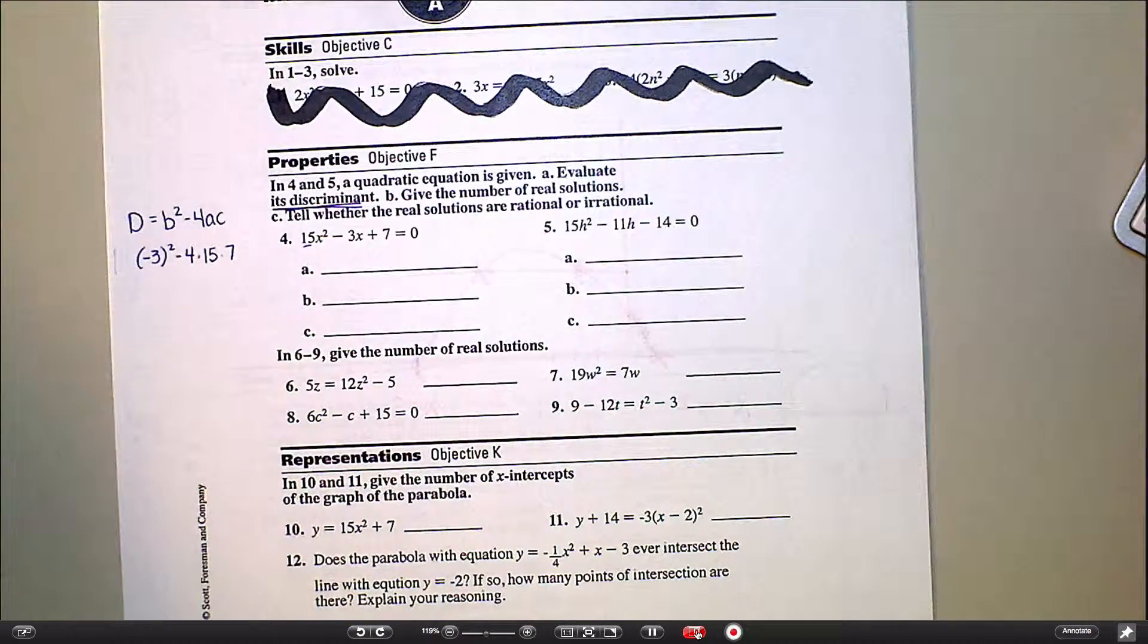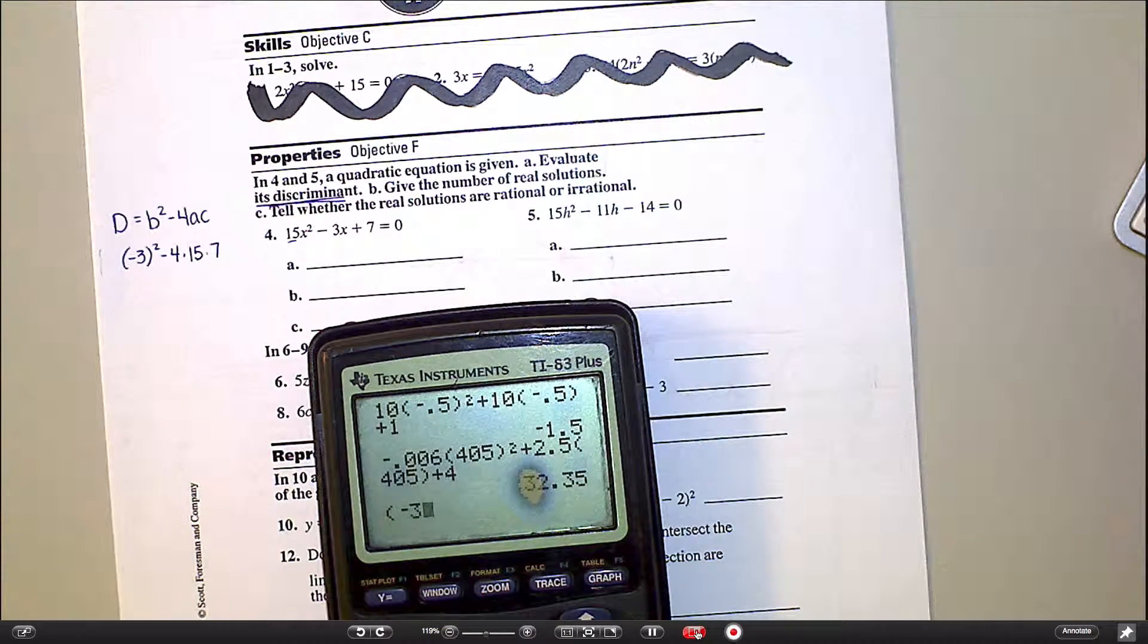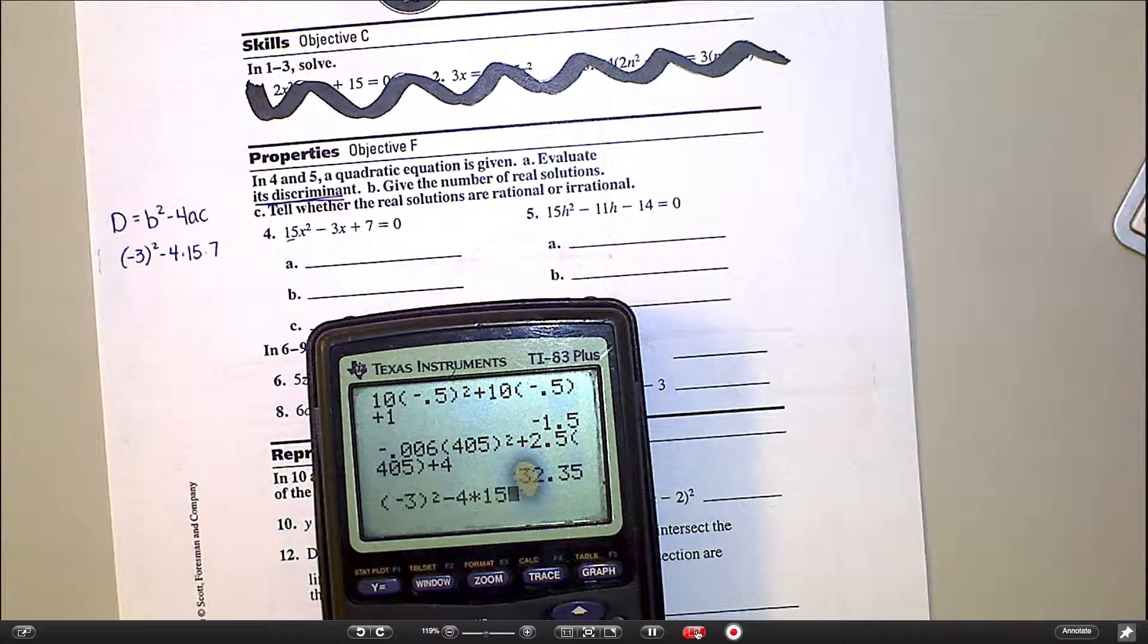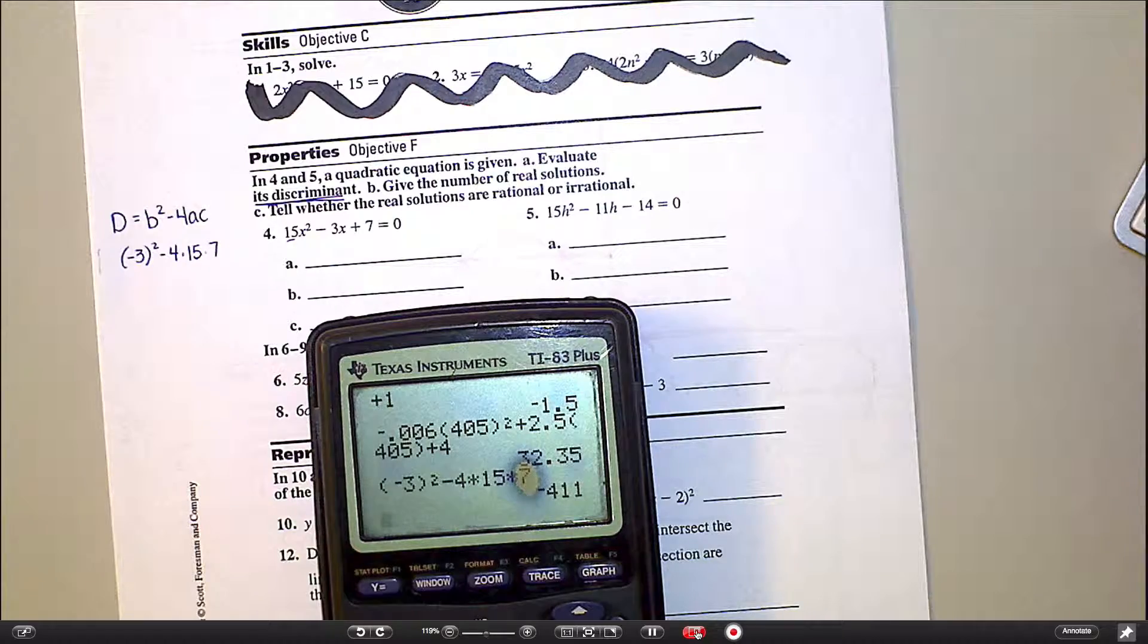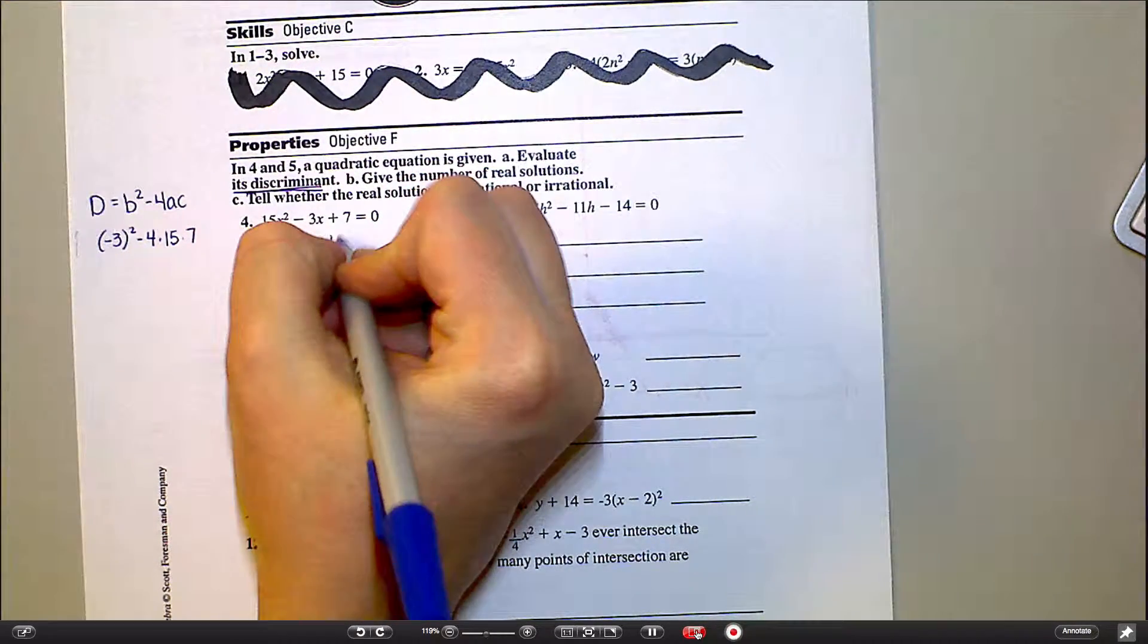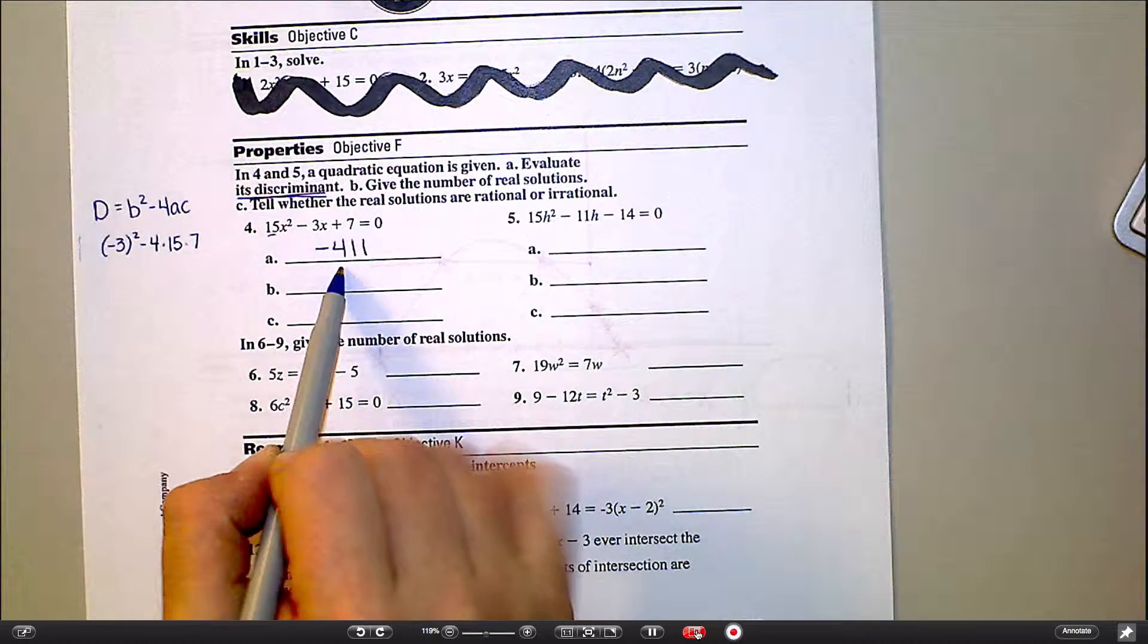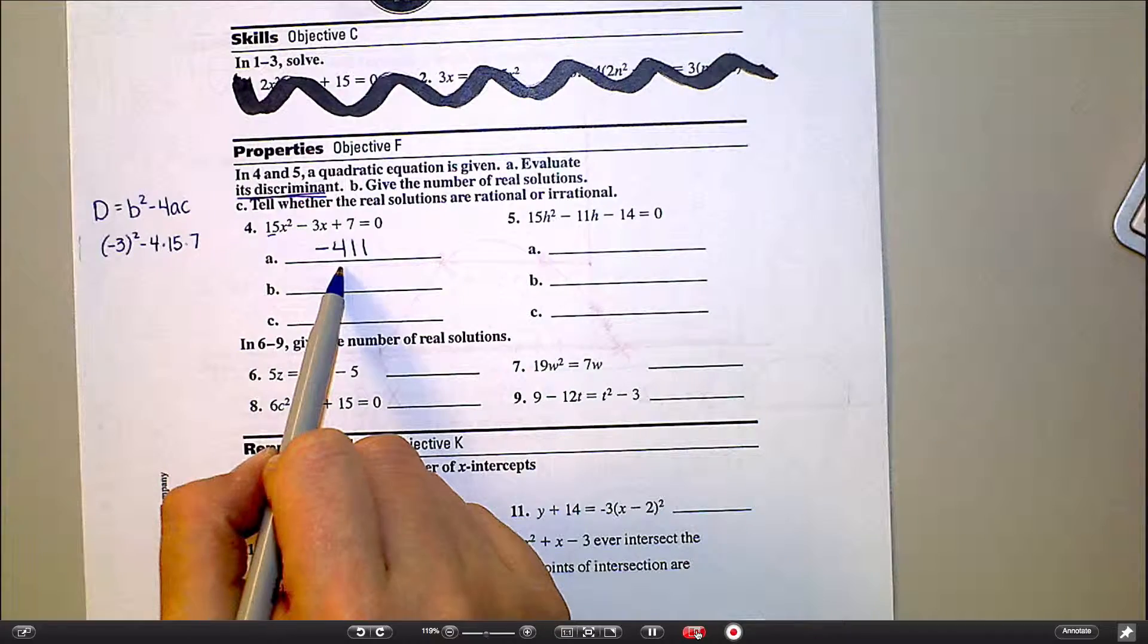Those parentheses are important. So I have negative 3 squared minus 4 times 15, times 7. And I get negative 411. So that's the value of the discriminant. That's what the discriminant actually equals.